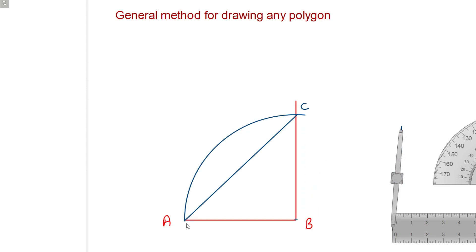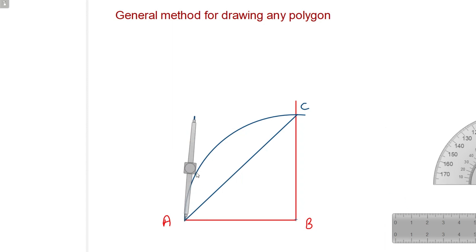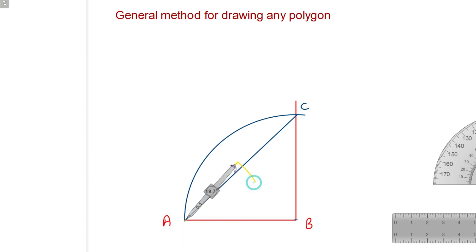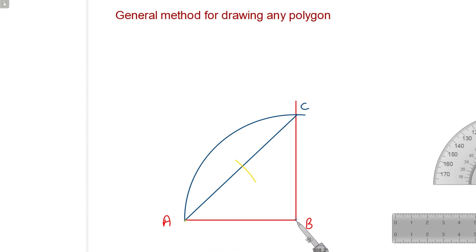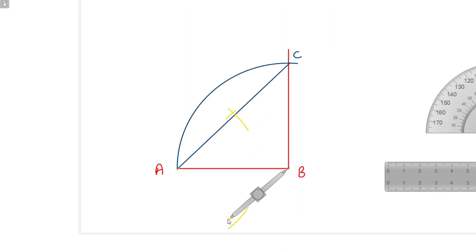Now here we have drawn the perpendicular line to line AB, and we already know the procedure for how to draw the perpendicular bisector of line AB. So we draw an arc at the top and at the bottom from A, and then taking B as center, arc at the top and again arc at the bottom.